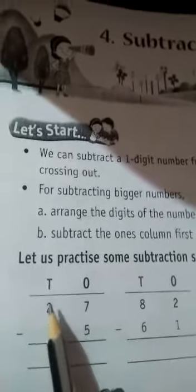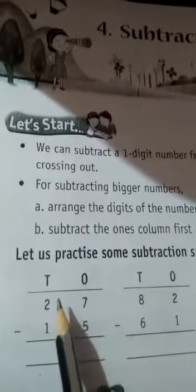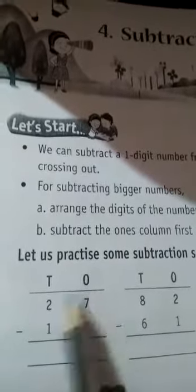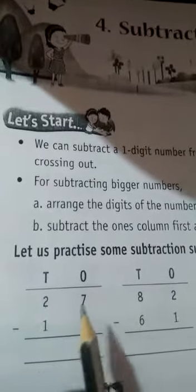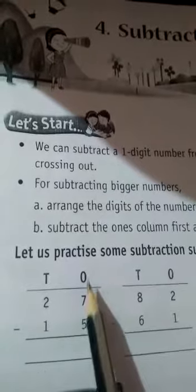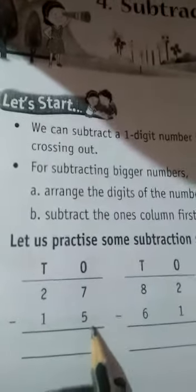Okay, so first here we have 27 minus 15. I arrange this as ones and tens. Tens we have to arrange like in addition, then we have to select the numbers in ones place and it is 7 and 5 here.